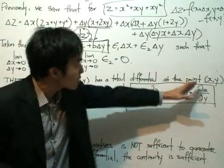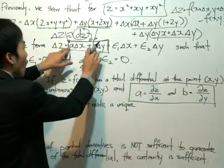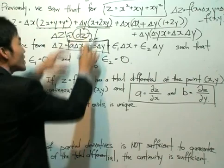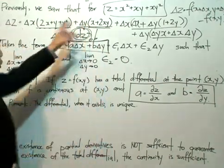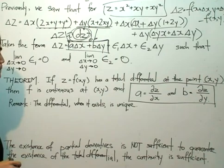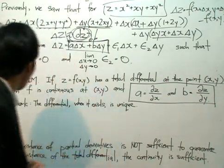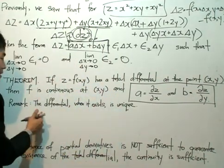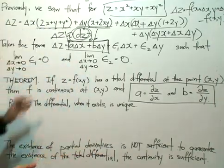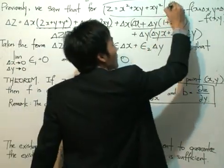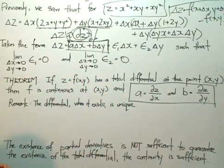Taking partial z over partial x and partial z over partial y, these a and b go into the total differential dz. The last remark is that the differential, when it exists, is unique — it comes from this form, and we can show that it's unique.